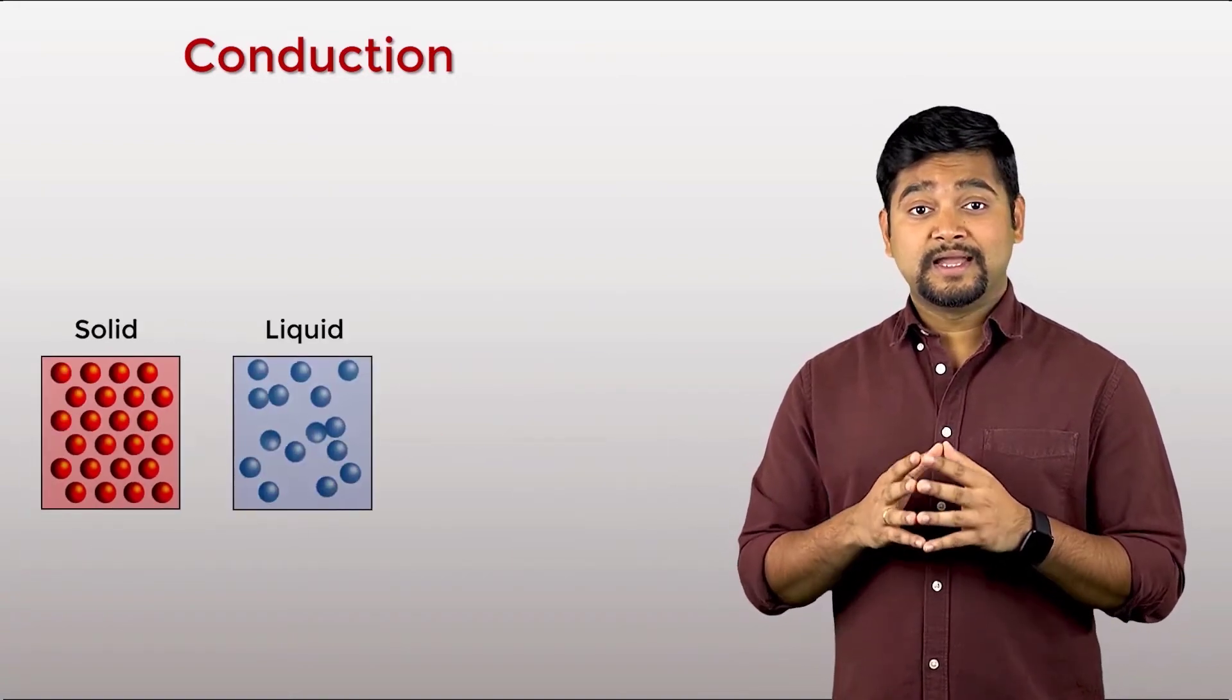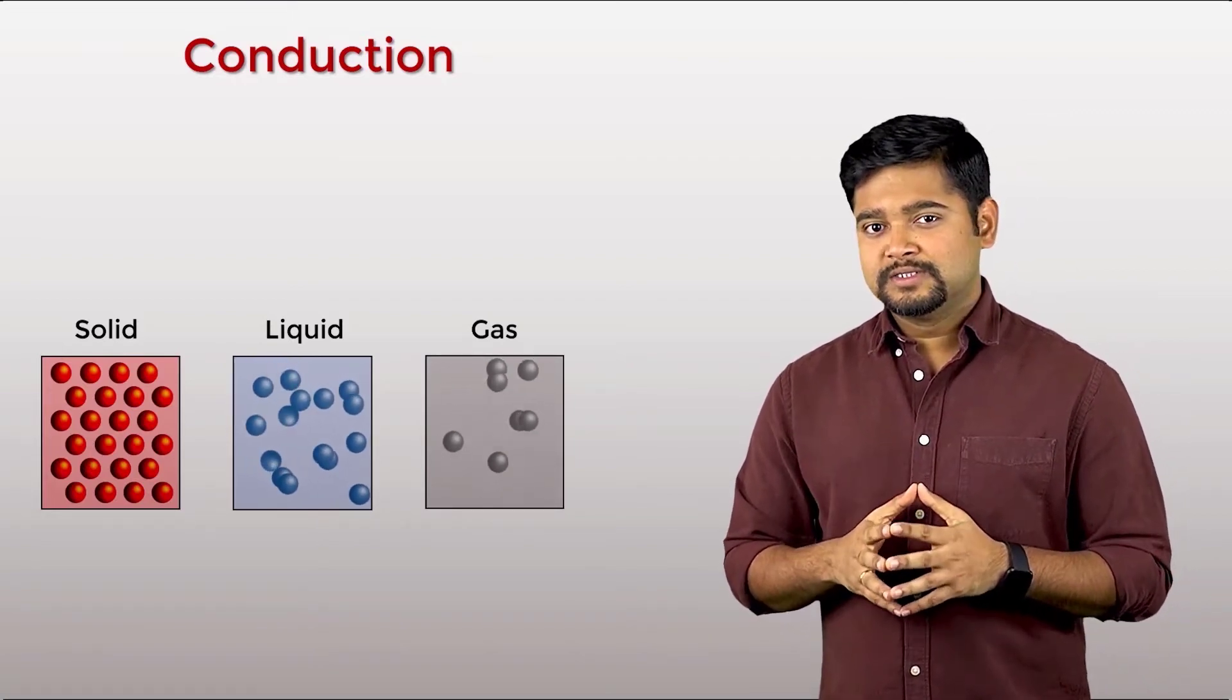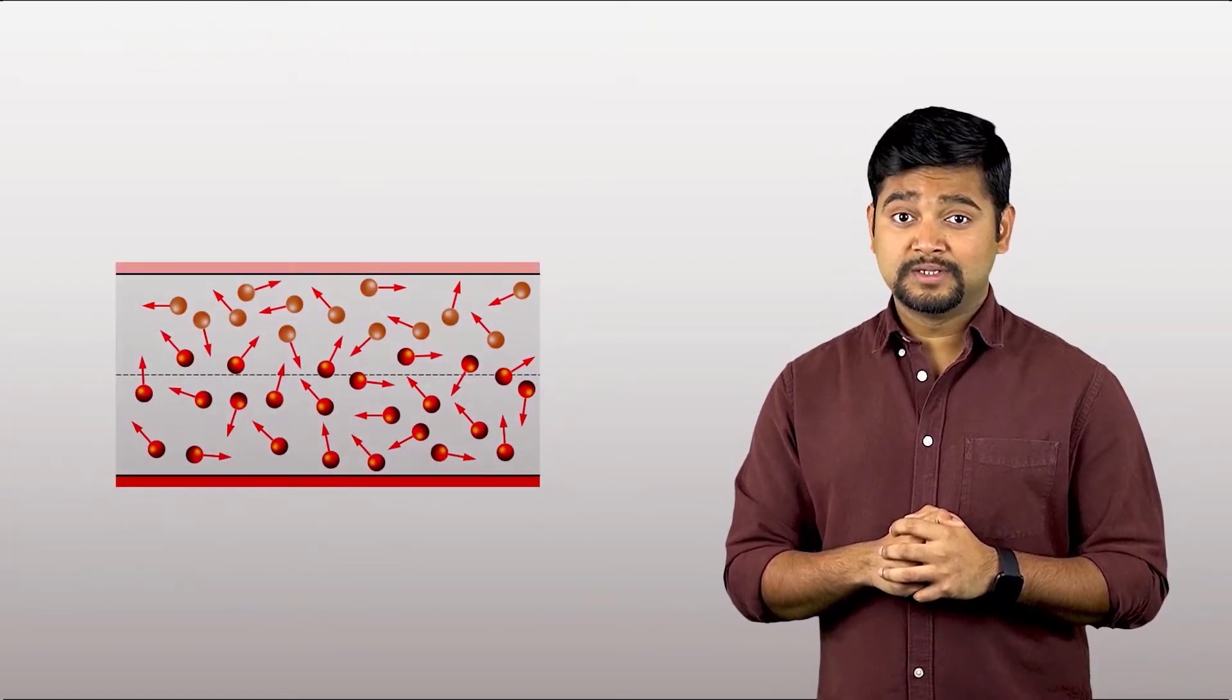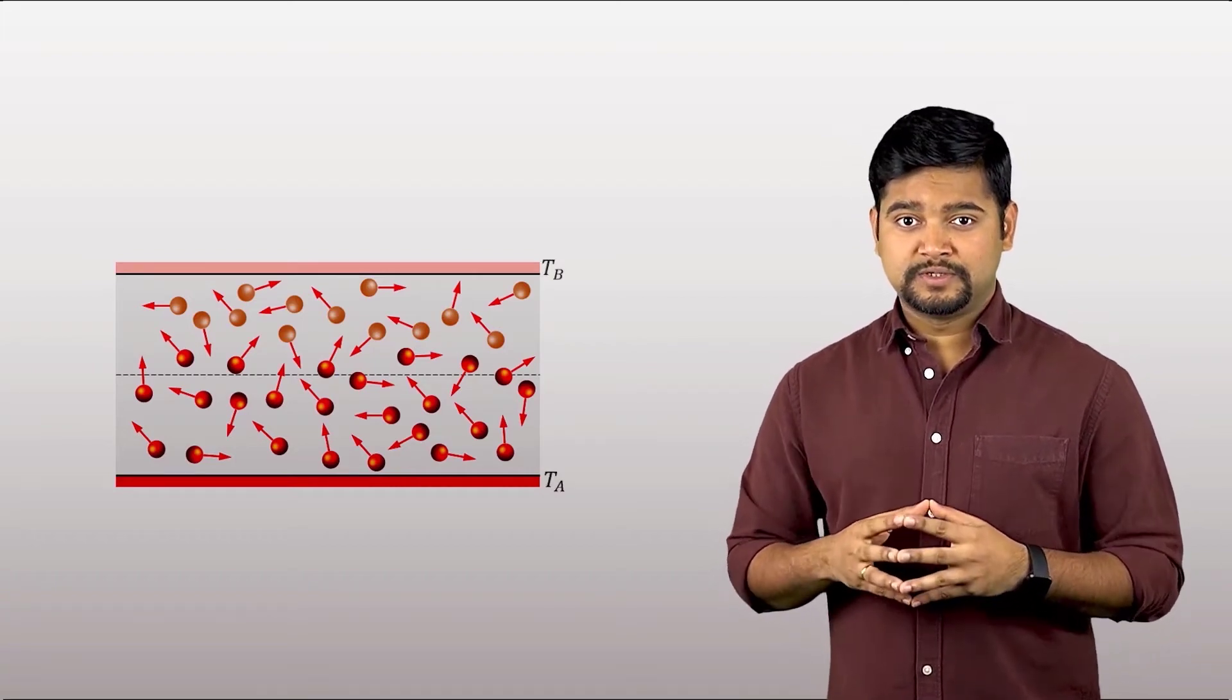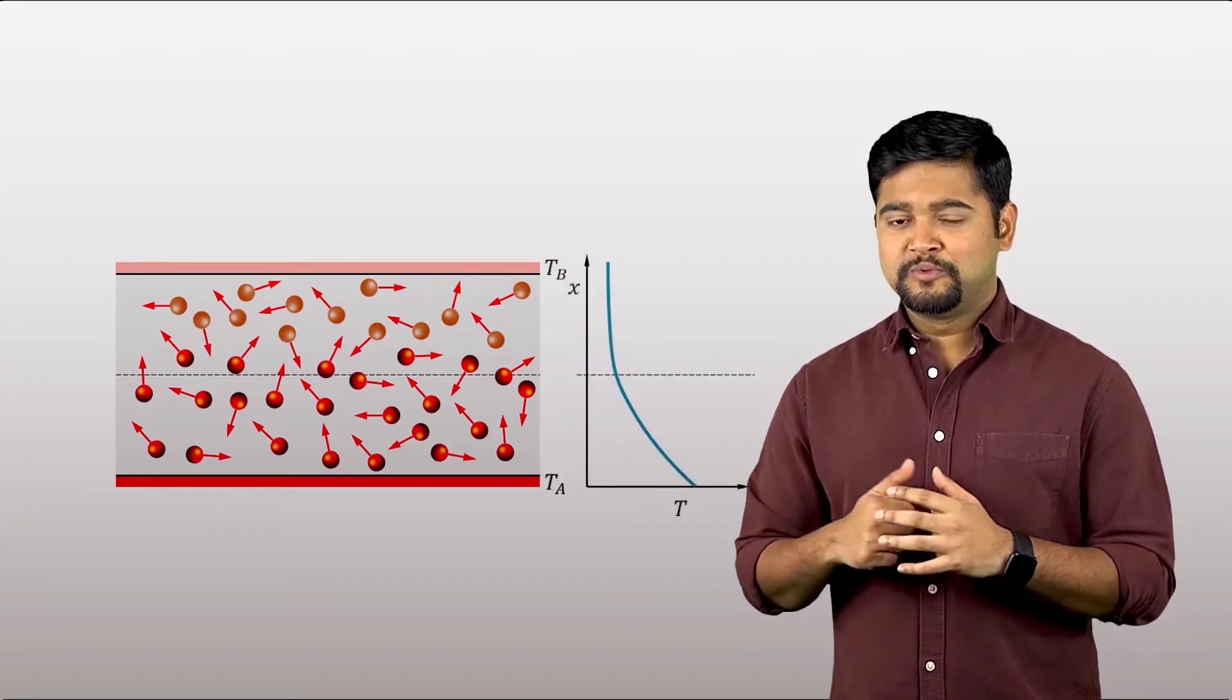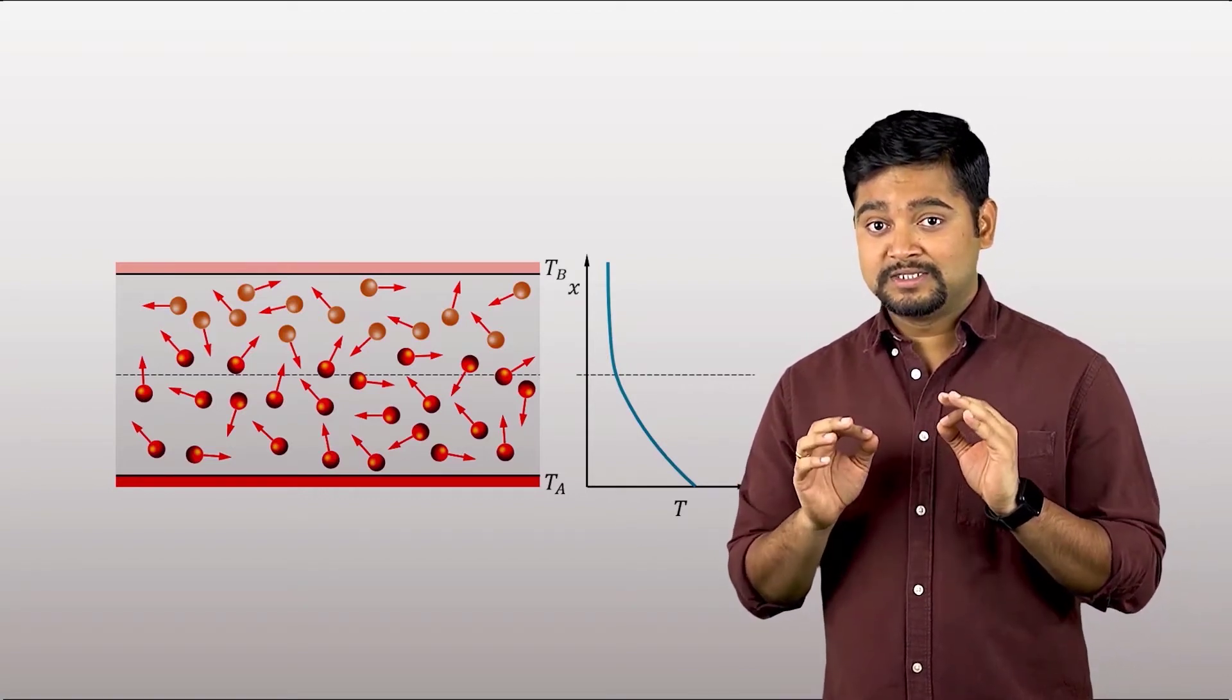Conduction can take place in solids, liquids or gases. In order to understand this mechanism, let's consider a gas occupying space between two surfaces. These surfaces are being maintained at different temperatures. And due to this, we get a temperature gradient across the gas, but without any bulk motion. Remember, the gas is stationary.